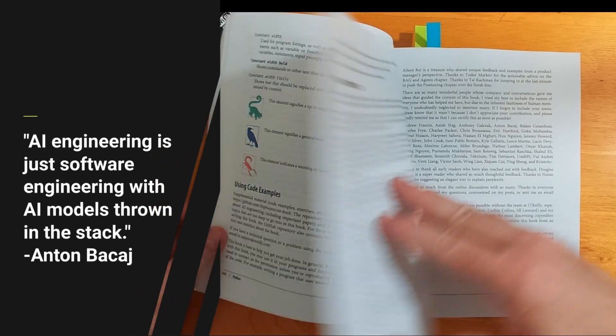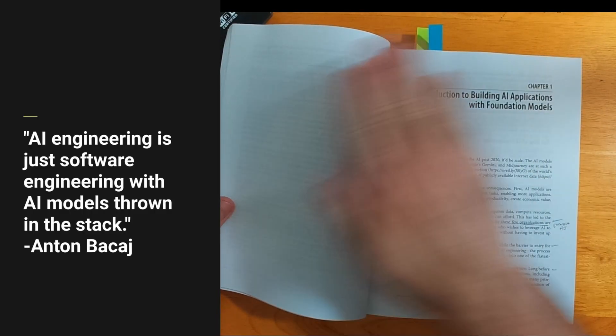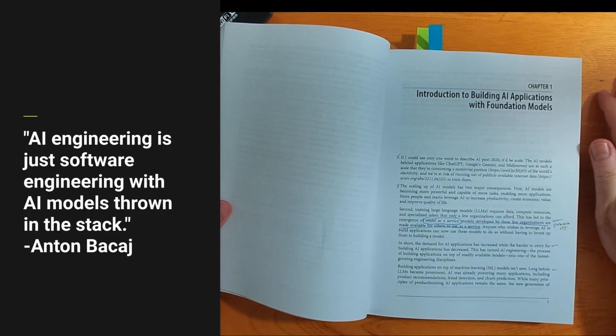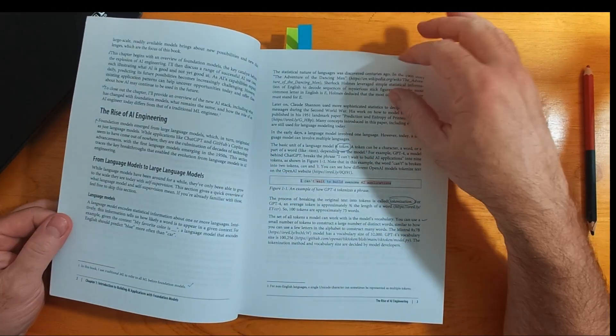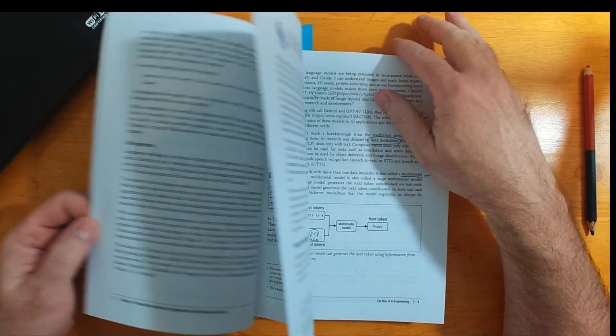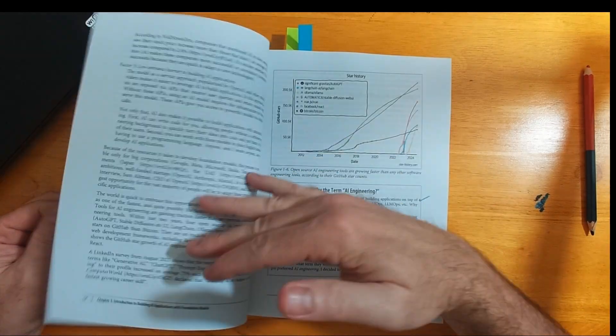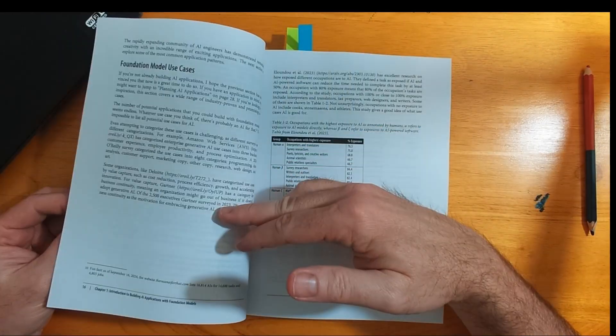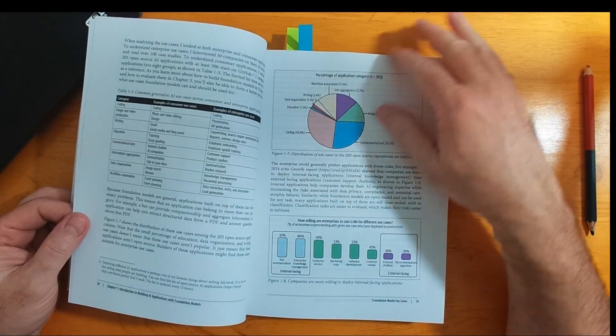The AI engineering book has a good quote in a footnote: AI engineering is just software engineering with AI models thrown in the stack. I agree with that. And the AI models sit at the bottom of the stack. That's why they are foundation models. You build applications on top of those models, usually through an API. Most software engineers these days are very comfortable working with APIs.